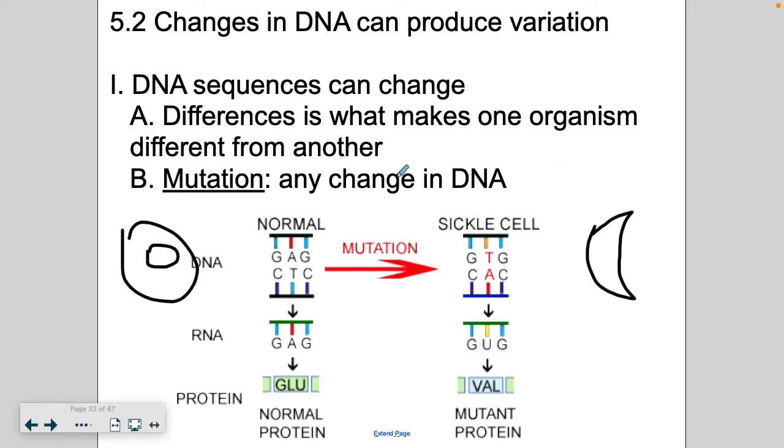Differences is what makes one organism different from another. When we look at our DNA sequences between us and different animals, they are different by different percentages. Like, I think I've read somewhere mice and humans share 60% to 70% of the same genes. But those differences is what makes one organism different from another.